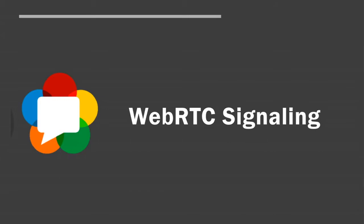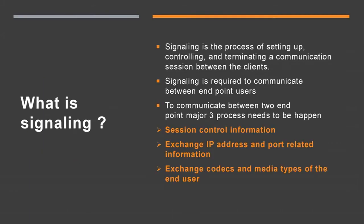In the last video we already discussed that we will use a signaling server in WebRTC. Let us see what is the signaling process first. Signaling is the process of setting up, controlling, and terminating a communication session between clients. Signaling is necessary to communicate between endpoint users in P2P communication. Generally, to communicate between two endpoints, three major processes need to happen: first, session control information needs to be shared; then, exchange IP address and port related information between end users; and last, codecs and media types of the end user need to be shared.